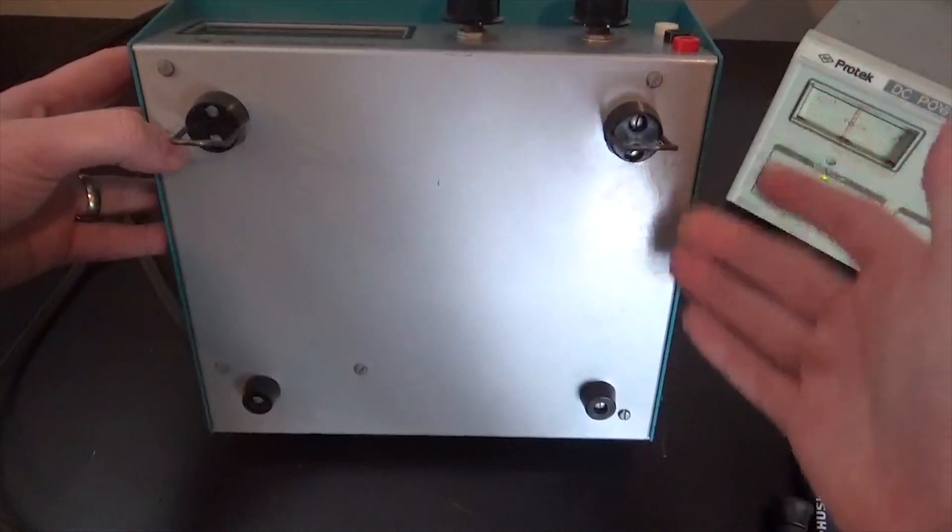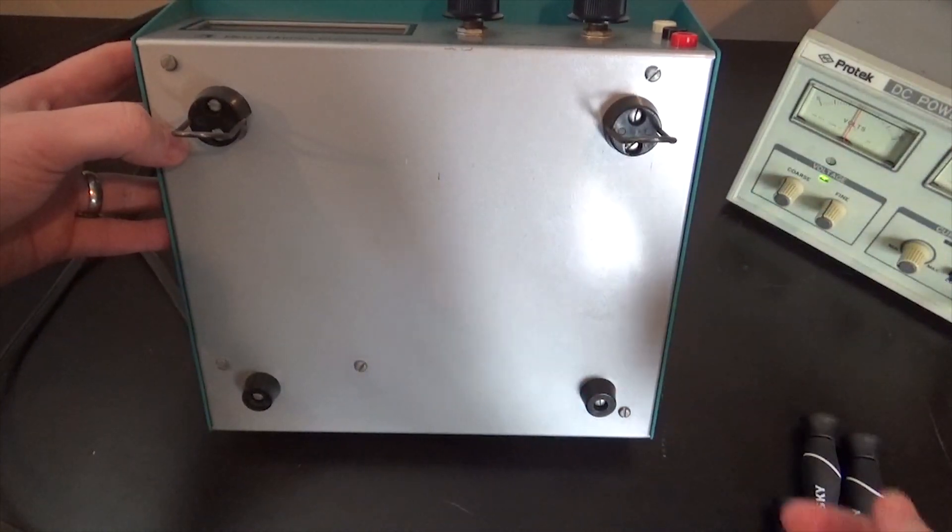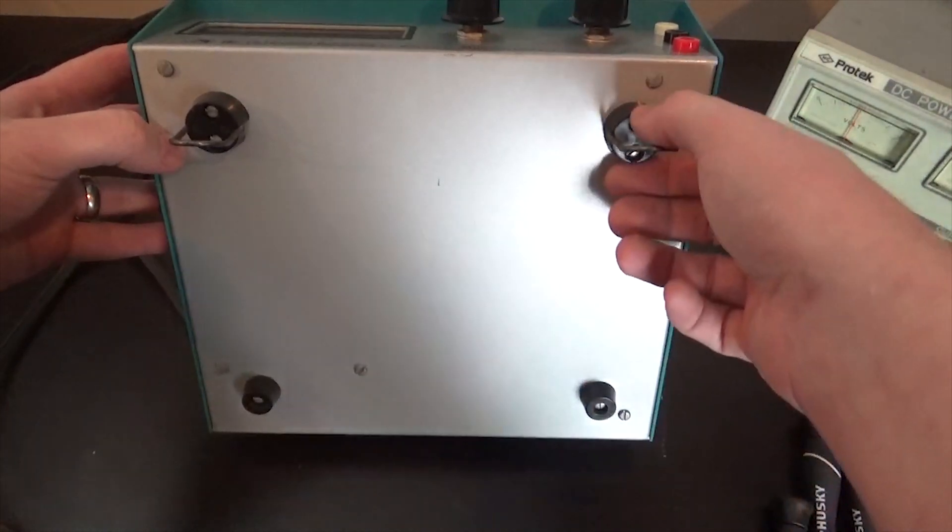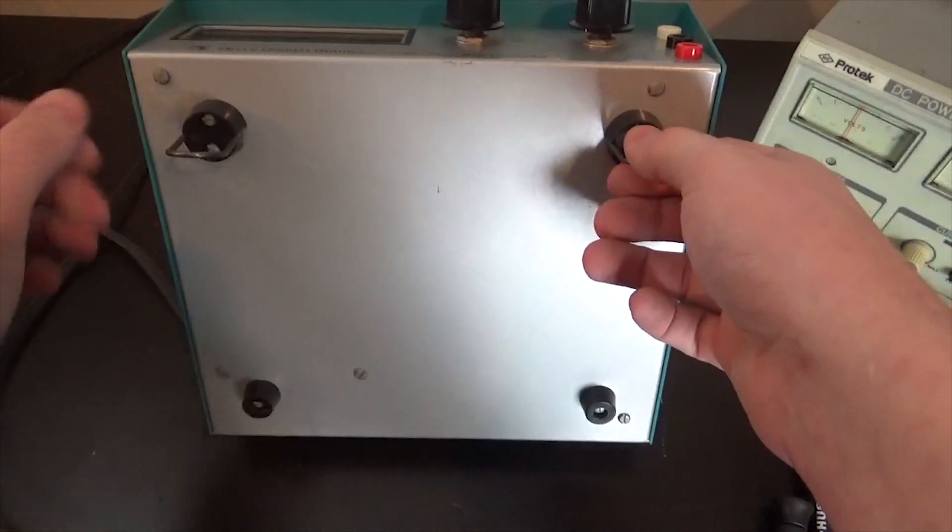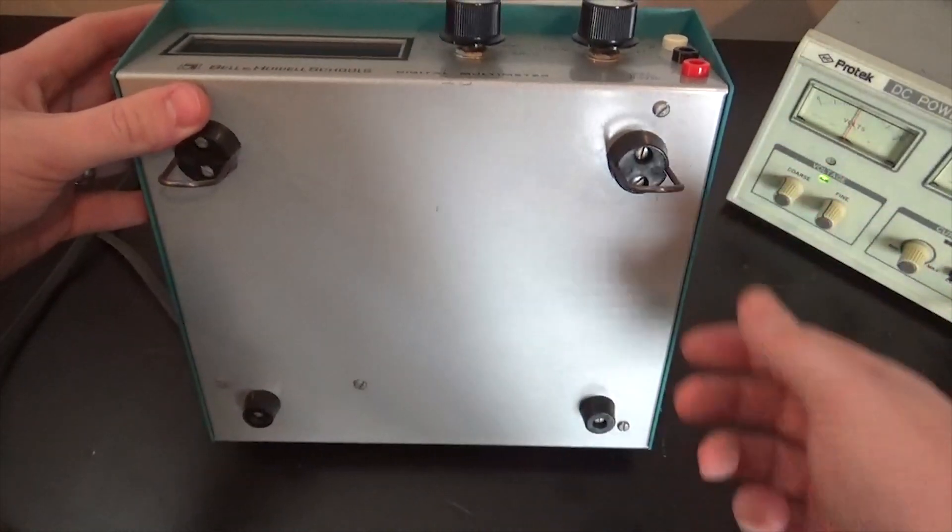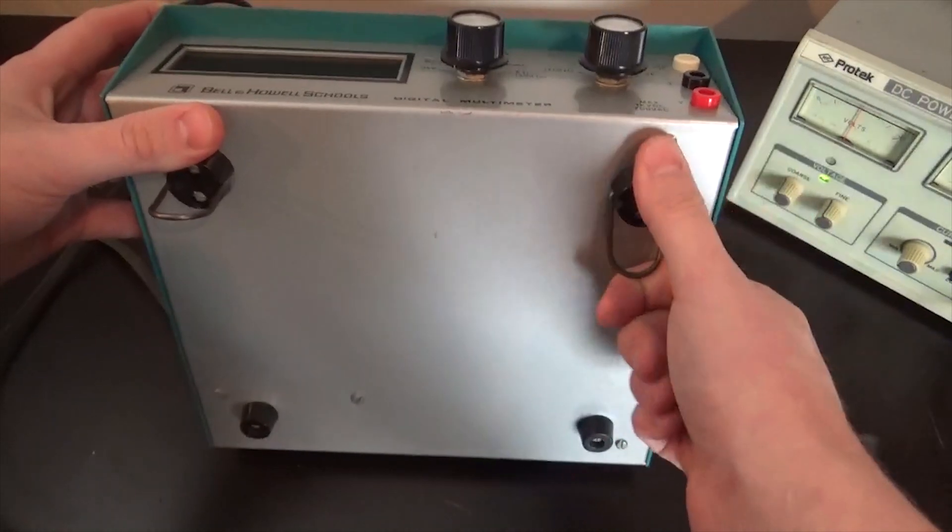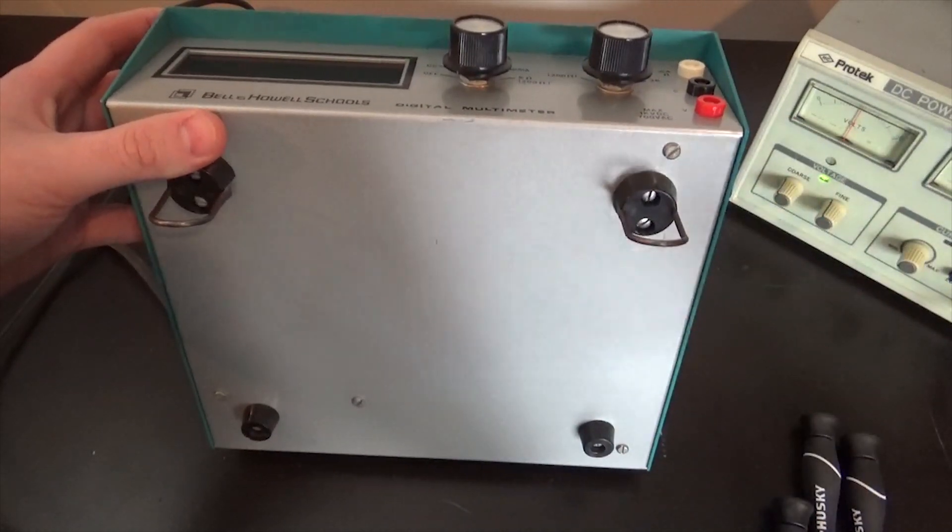We have four plastic feet at the bottom, no grip on them. I might throw some grip just to give it so it doesn't slide around on the workbench. The front two feet have little flip tabs to give you a little better viewing angle.